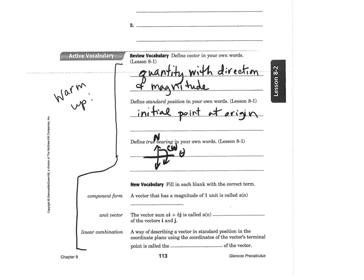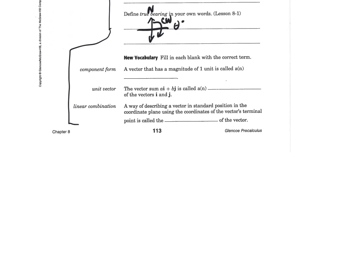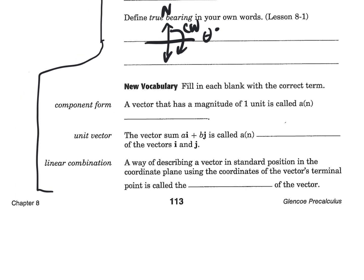Clockwise. It is an angle measure, isn't it? True bearing starts at north and goes clockwise. Alright, so now we have three vocabulary words that are new for today.